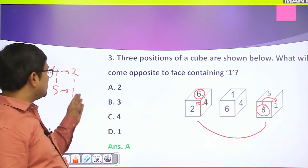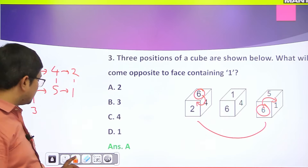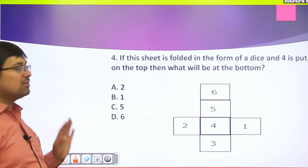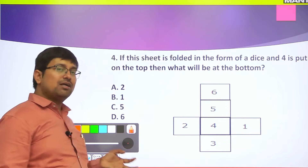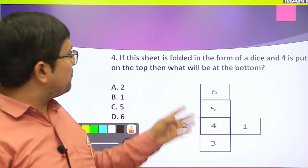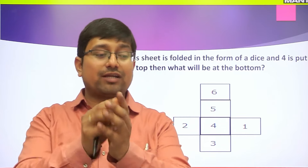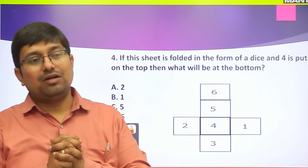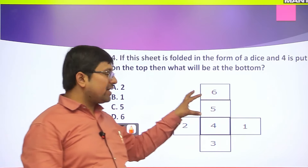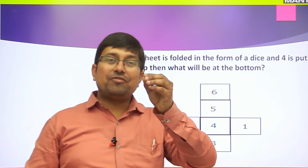Now here is a different type of question which I referred to at the start - the open form of dice. A dice is cut and opened out flat. Now you have to determine the opposite faces from this unfolded net. What you need to do is imagine folding it back into a cube.